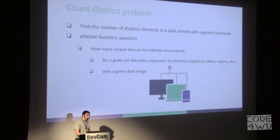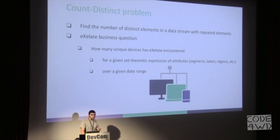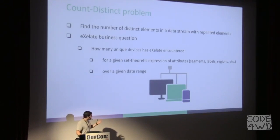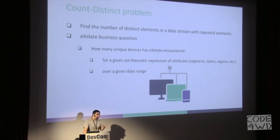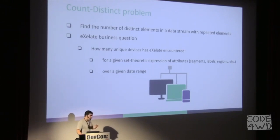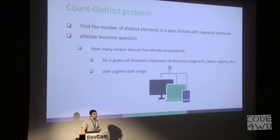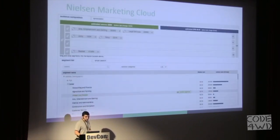One of the problems you can solve with Druid is the count-distinct problem — finding the number of unique elements in a stream of events. At Exelate, more specifically, we are interested in counting the number of unique devices we have seen for each attribute. And to make things even more complex, most of the time we are interested in combinations of attributes over some date range, so a possible question could be: how many unique devices are being used by males from the United States, and so on.